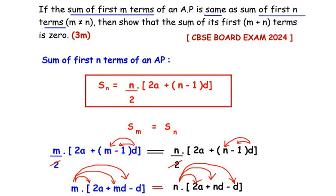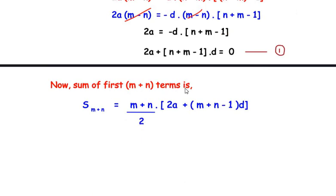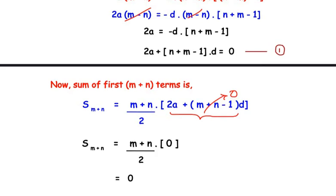Let us write the equation for the sum of first m plus n terms using the AP formula. S of m plus n equals m plus n over 2 times 2A plus m plus n minus 1 times D. This is simply the AP sum formula with n replaced by m plus n. Now the bracket 2A plus m plus n minus 1 times D is exactly equation 1, whose value is zero. Therefore the entire bracket equals zero, and m plus n over 2 multiplied by zero gives us zero. So the sum of first m plus n terms is zero.